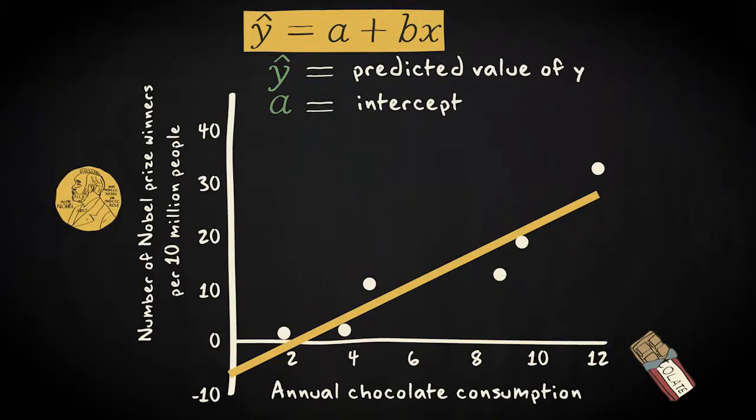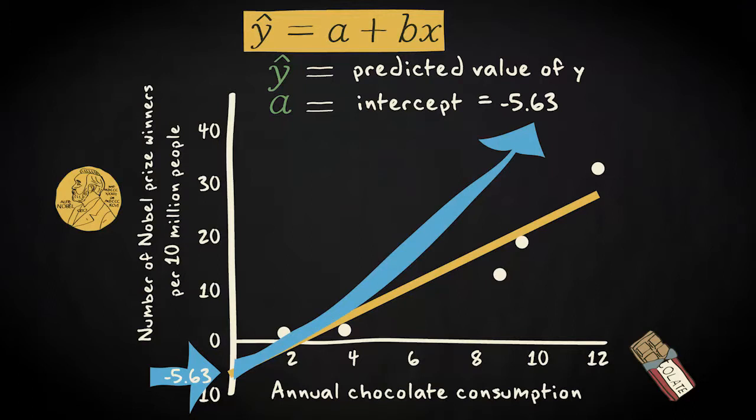a is what we call the intercept, or the constant. It is the predicted value of y when x equals 0. It is, in other words, the predicted value of y where the regression line crosses the y-axis and x does equal 0. In our case, that's minus 5.63.